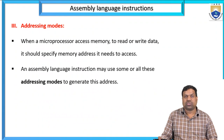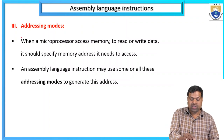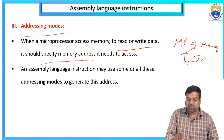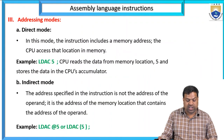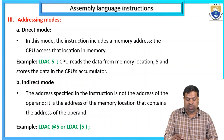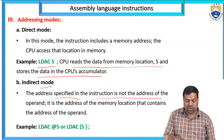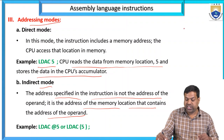Addressing modes: when a microprocessor accesses memory to read or write data, it must specify the memory address it needs to access. Assembly language instructions may use some or all the addressing modes to generate this address. Direct mode: the instruction includes a memory address; the CPU accesses that location in memory. Example: LDS E5 — CPU reads the data from memory location 5 and stores it into the CPU. Indirect mode: the address specified in the instruction is not the address of the operand but the address of the memory location that contains the address of the operand.